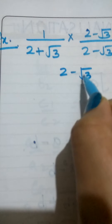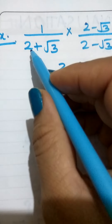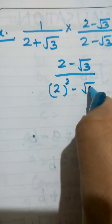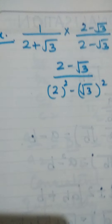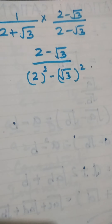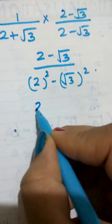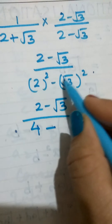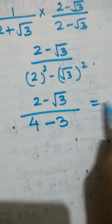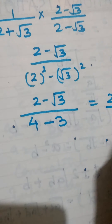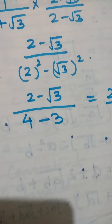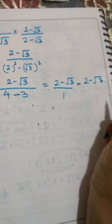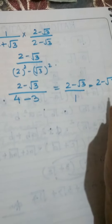So this becomes (2 − √3) in the numerator, and in the denominator it is (a+b)(a−b) = a² − b², giving 2² − (√3)². In the numerator it remains as (2 − √3). In the denominator it becomes 4 − 3, which equals 1. So the answer is (2 − √3) upon 1, or simply 2 − √3.